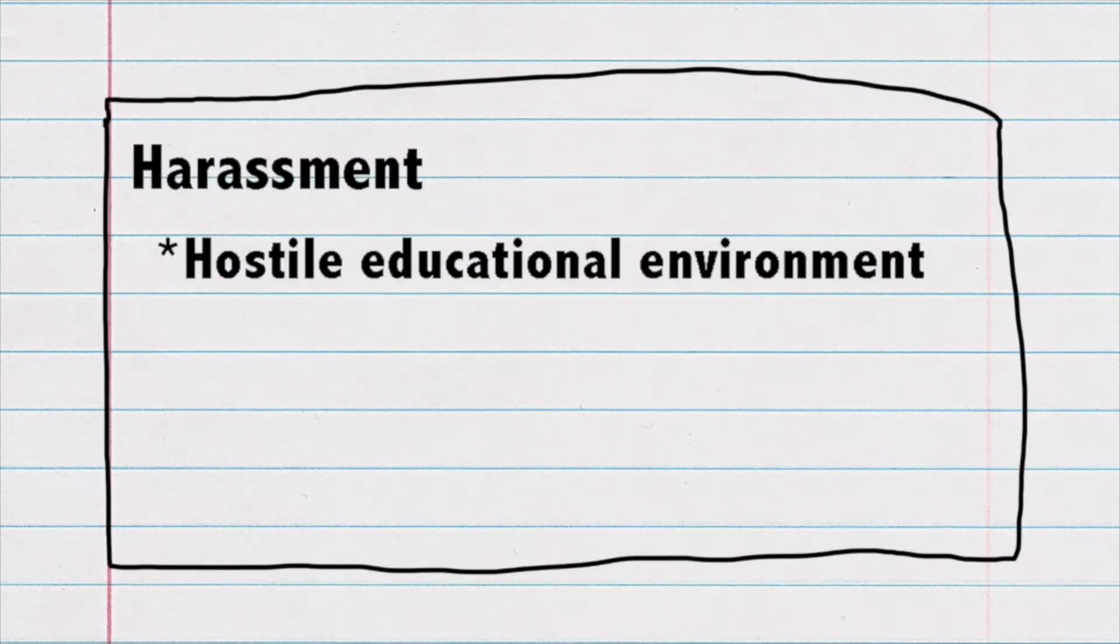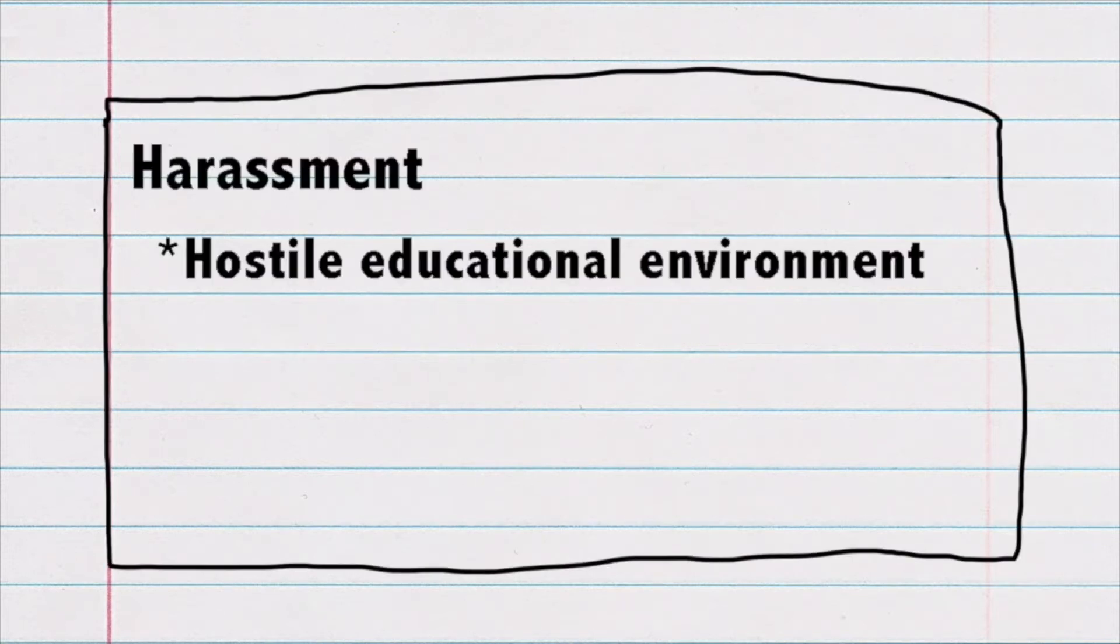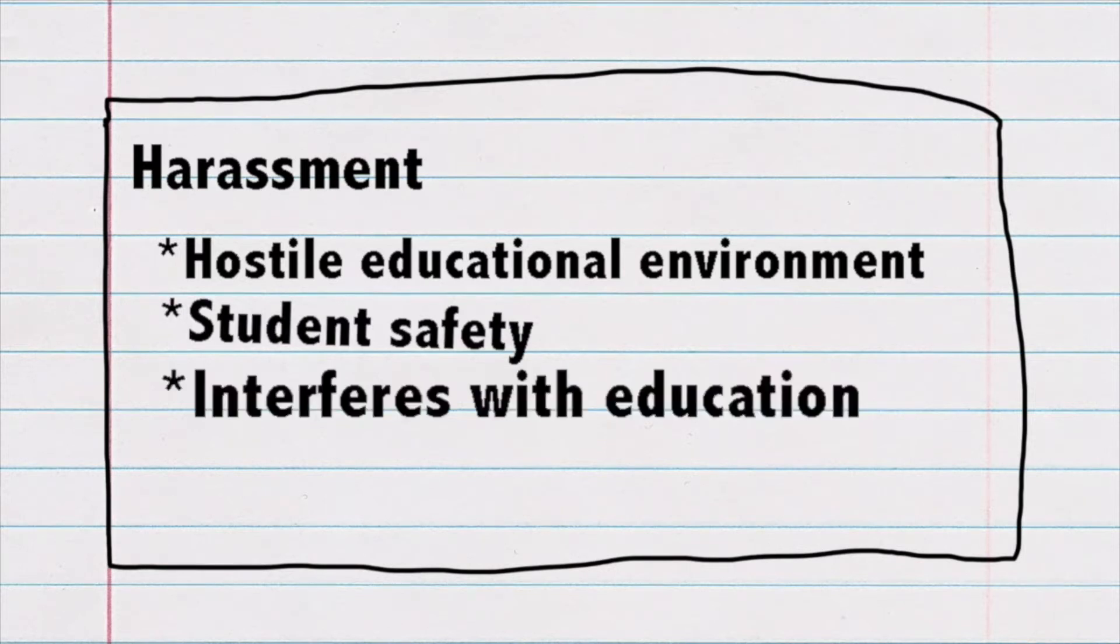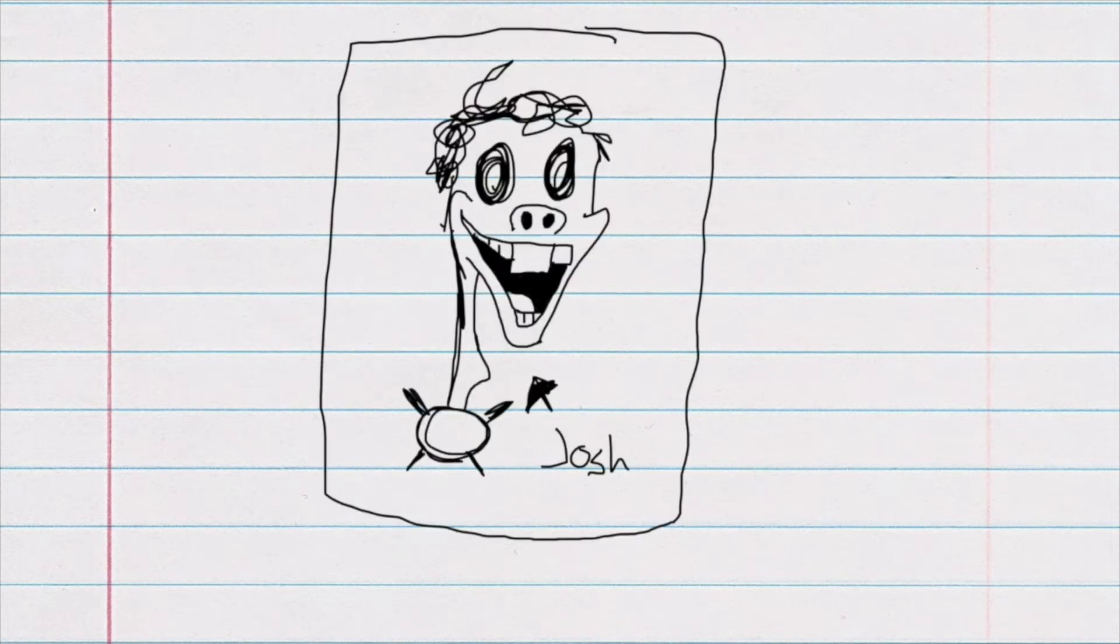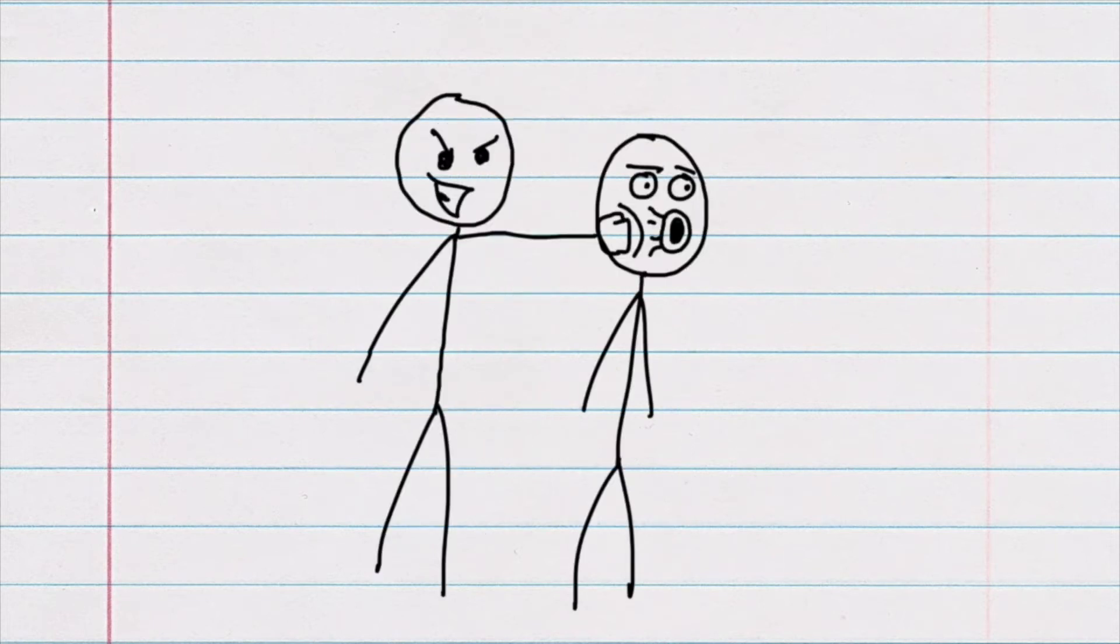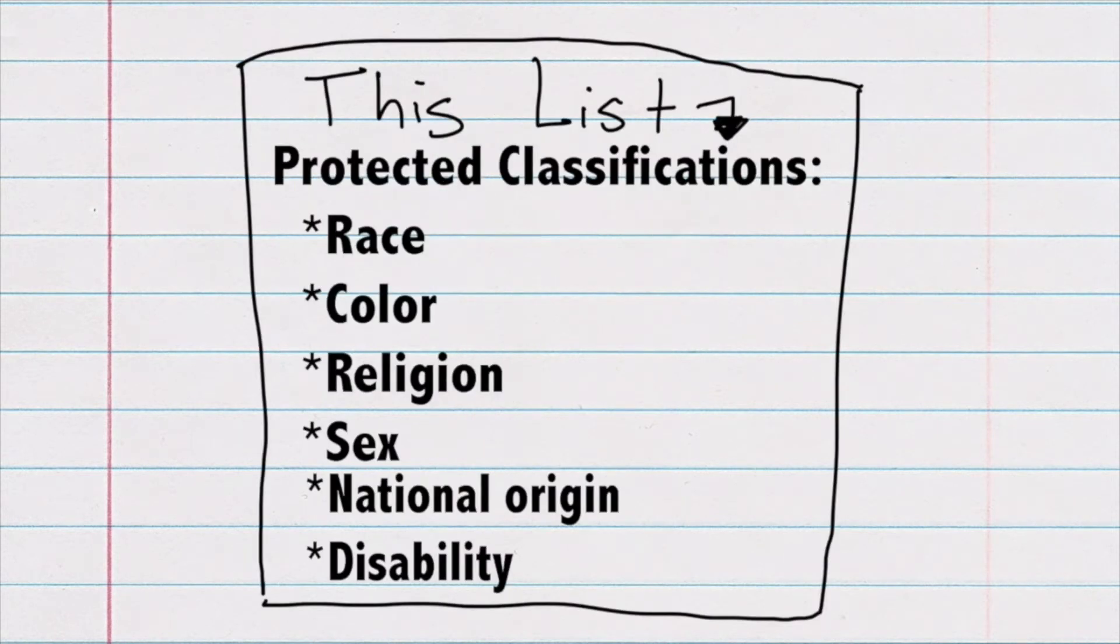Harassment includes activity that creates a hostile educational environment, or that adversely interferes with the student's safety, education, or participation in school-related activities. Although harassment may be manifest in a variety of ways, such as verbally, in writing, graphically, or physically, this list shows the protected classifications that may not be used as a basis for the harassment.